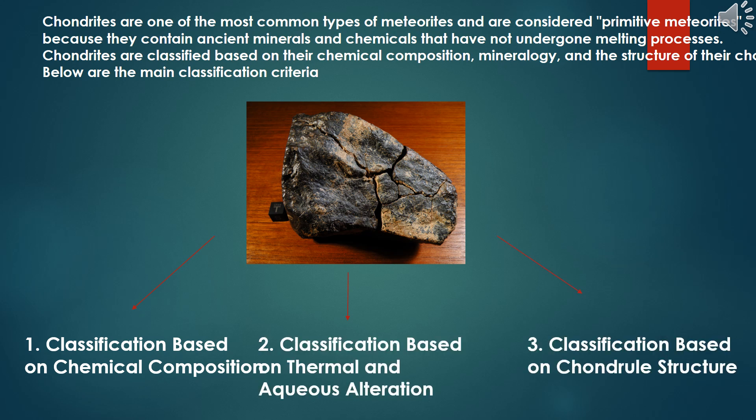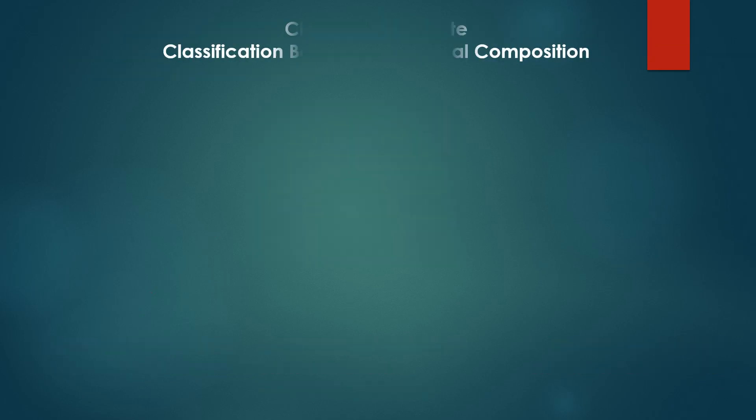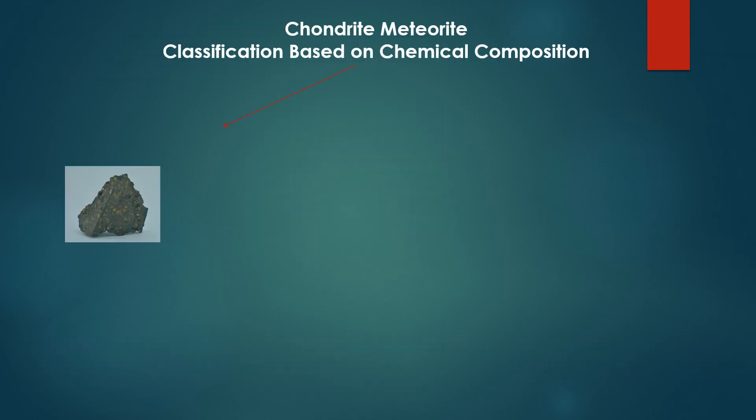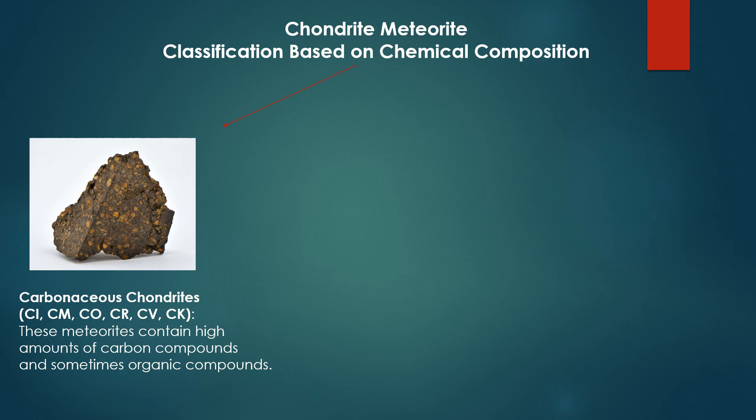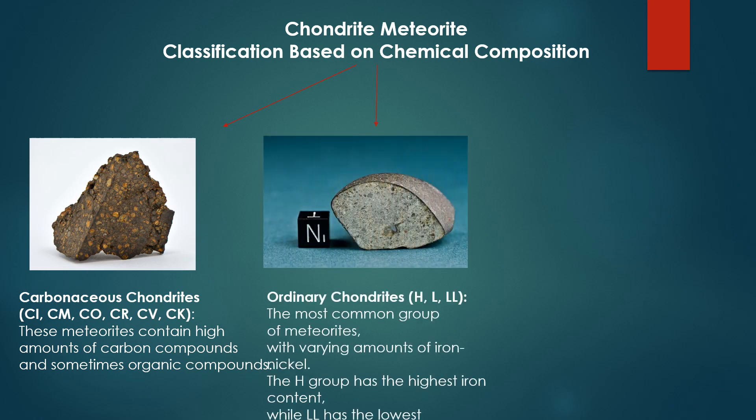Classification based on chemical composition. Carbonaceous chondrites (CI, CM, CO, CR, CV, CK): these meteorites contain high amounts of carbon compounds and sometimes organic compounds. Ordinary chondrites (H, L, LL): the most common group of meteorites with varying amounts of iron-nickel.